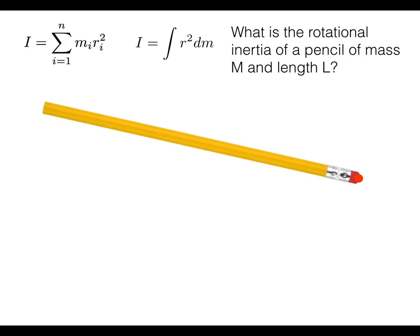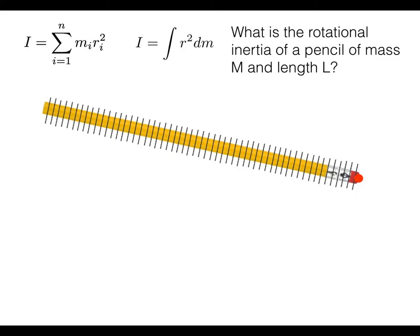How are we going to do this? We have two equations at our disposal shown at the top of the screen. When we have a continuous object like this pencil, we want to use the integral form on the right. You imagine breaking up the pencil into little pieces — choose a piece near the middle — that has mass dm and is at a distance r away from the axis of rotation.